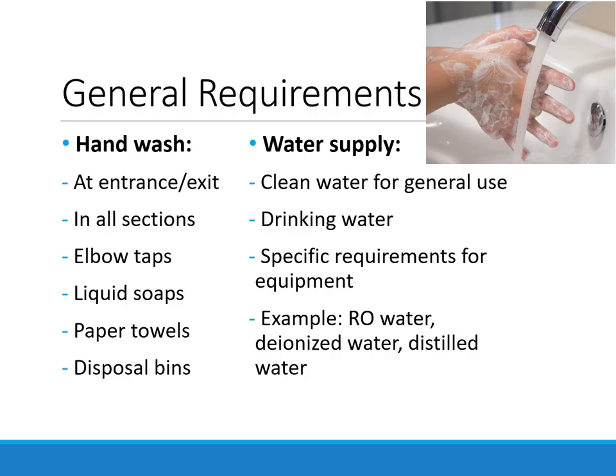The general infrastructural requirements of a laboratory begin with hand wash facilities. These must be available at the entrance and exit and in all individual sections. They must be fitted with elbow-operated taps, liquid soap, paper towels, and disposal bins for the paper towels at each hand wash sink.